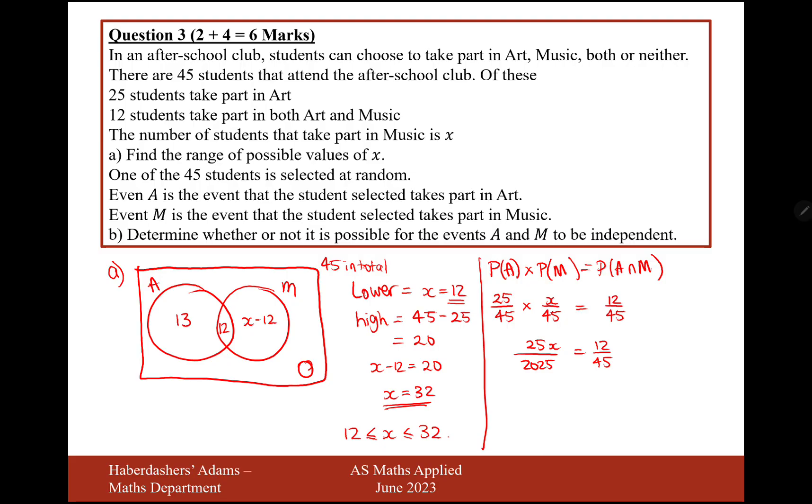2025 equals 12 over 45. Multiply the 2025 on the other side, so multiply 12 over 45.